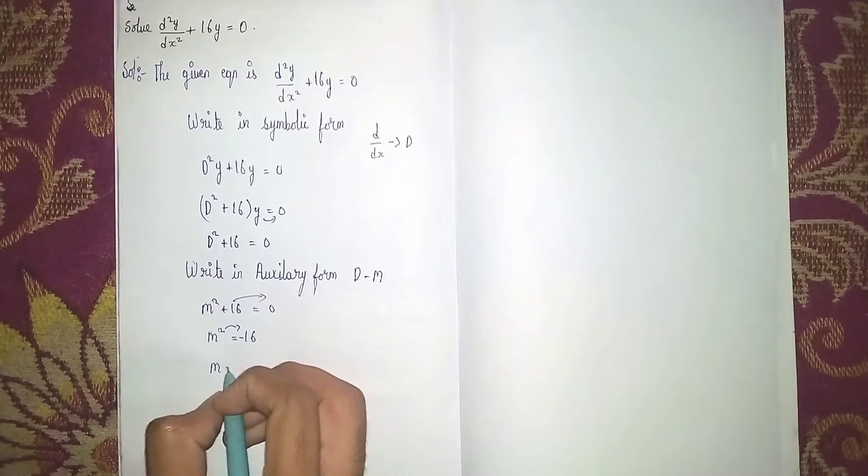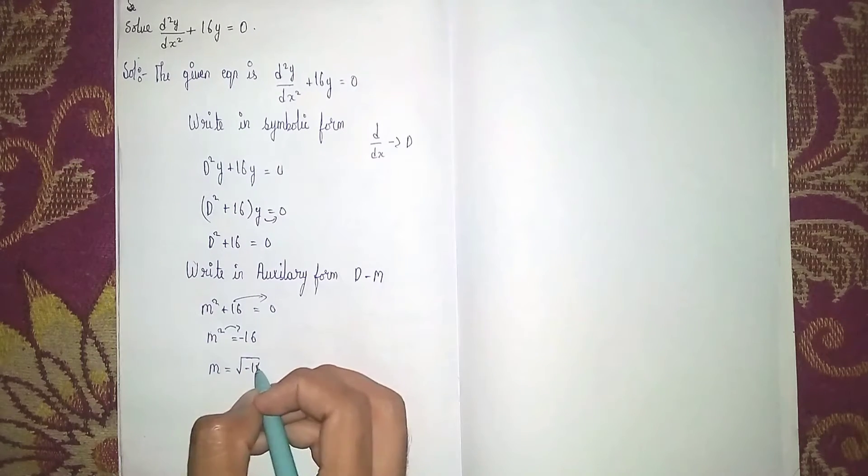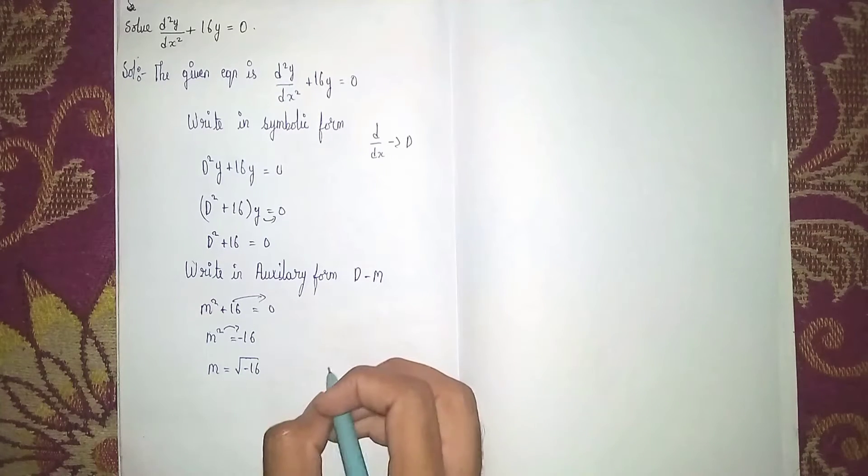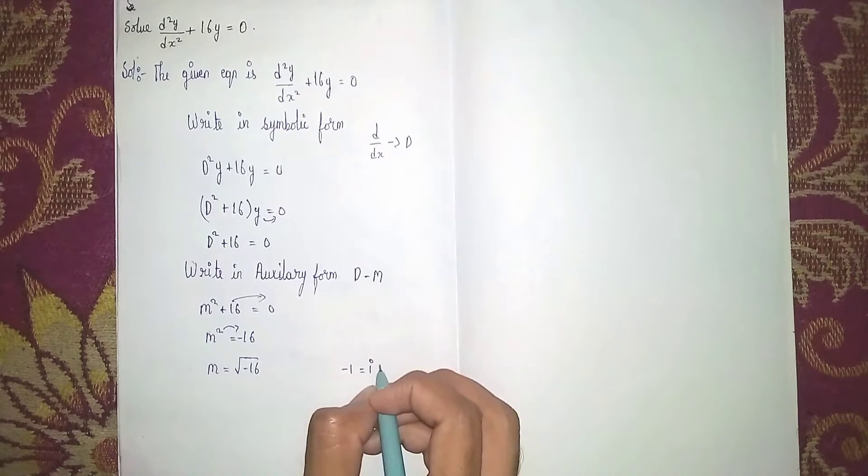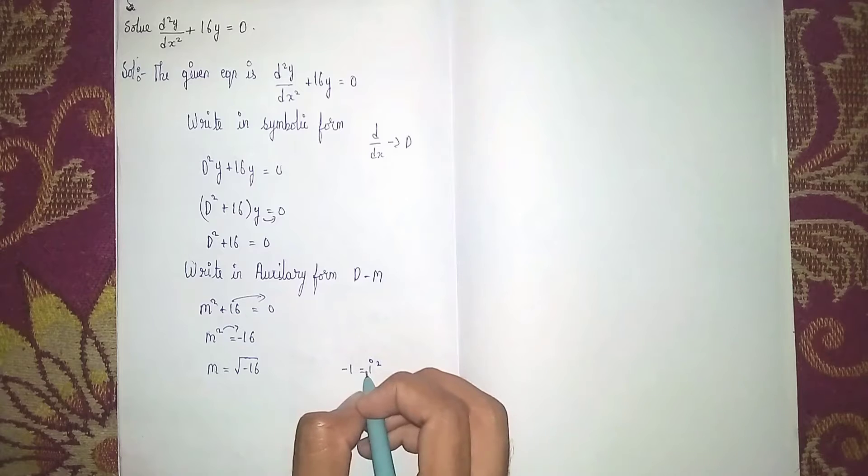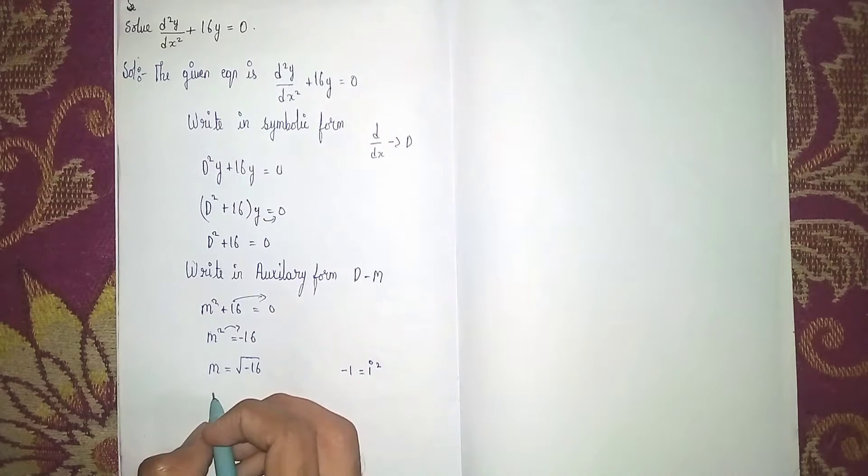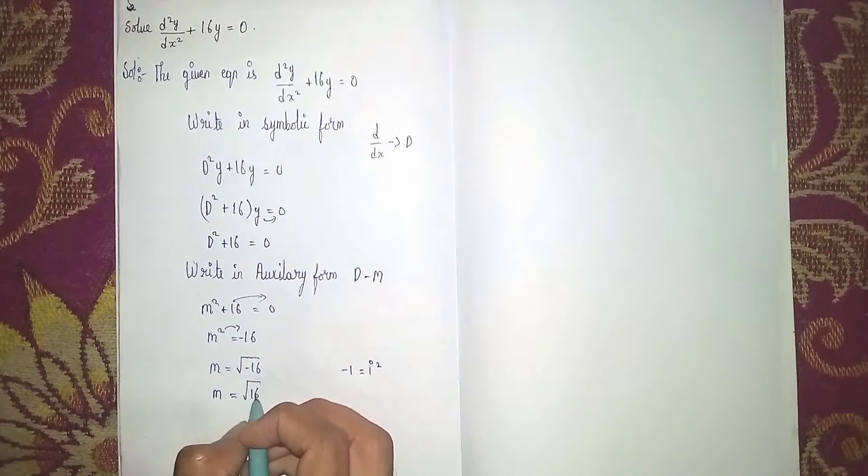So m is equal to under root minus 16. Now under root 16 is 4, but minus also we have to remove. So I'm taking minus 1 is equal to i squared. Yes, it becomes m is equal to under root 16 i squared.